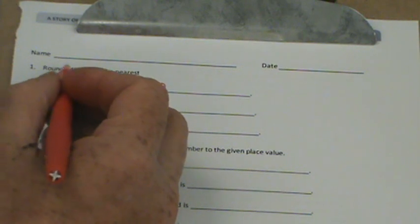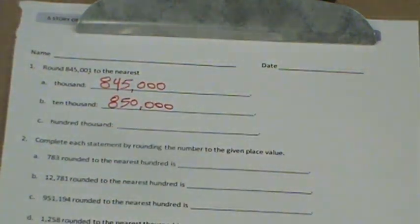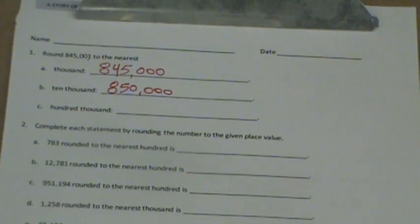It would go up to the nearest ten thousand. So the 4 would go up to a 5. So it would be 850,000. Sorry about that. Just kind of lost it for a second.